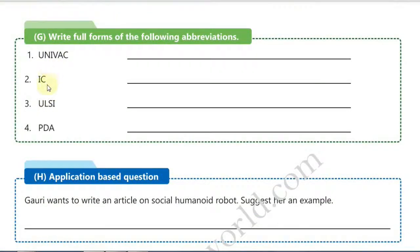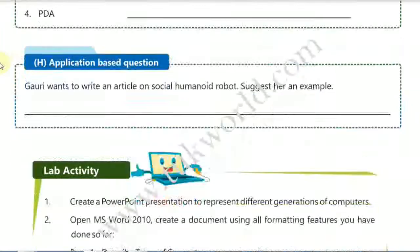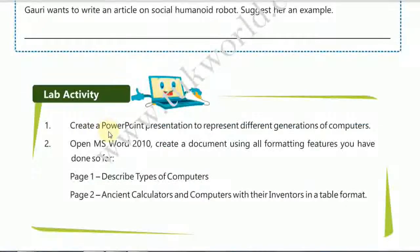You also need to write the full forms of: UNIVAC, IC, ULSI, and PDA — all of which were taught in this lesson, so try to write them without looking at the page. Application-based questions are also there for you to solve. For the lab activity, if possible at home you can do it, otherwise when school reopens I will take this activity in the computer lab.